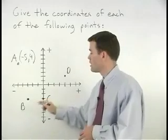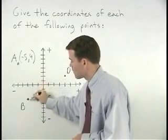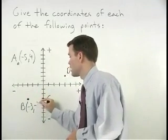So for point B, we go to the left 3 and down 3. So that's negative 3, negative 3.